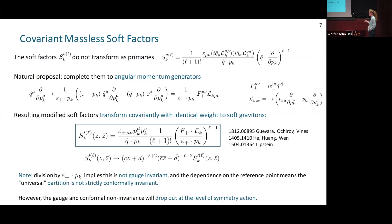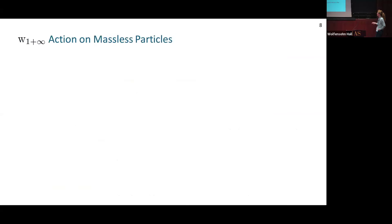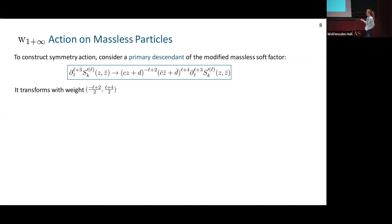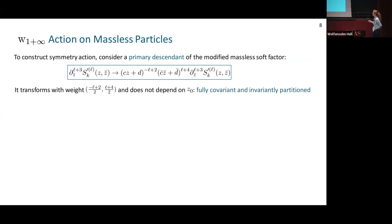To define the symmetry action, we consider a primary descendant of the soft factor. Functions transforming with the weight of the soft factor admit a descendant that also transforms as a primary, obtained by taking derivatives in z-bar. This descendant transforms with weight (minus-l-plus-2 over 2, l-plus-4 over 2), adding weight from the derivatives. Nicely, this expression no longer depends on the reference point, so it's fully covariant. At the level of the primary descendant there is an invariant partition between the primary descendant of the soft factor and the primary descendant of the rest of the amplitude.